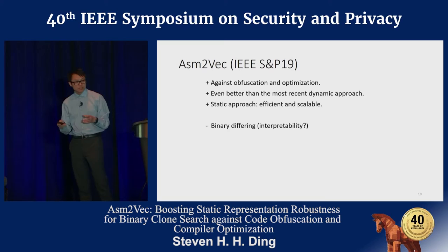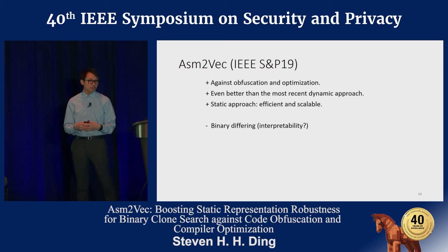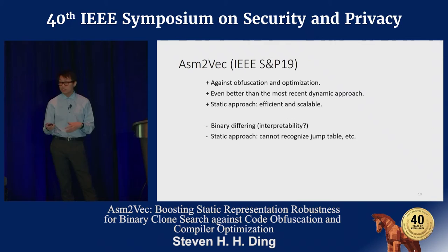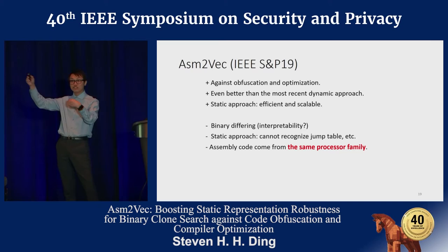The problem is that when we present a clone, because it's a vector representation, it's very difficult to explain to the reverse engineer exactly why these two functions are considered a clone, unlike subgraph-based clone search methods - though after obfuscation the graph boundaries are broken anyway. There are also inherent disadvantages of the static approach: it cannot recognize dynamic jump tables, and we assume assembly code comes from the same architecture family - searching English against English, not x86 against ARM.